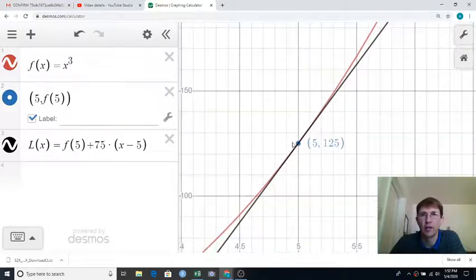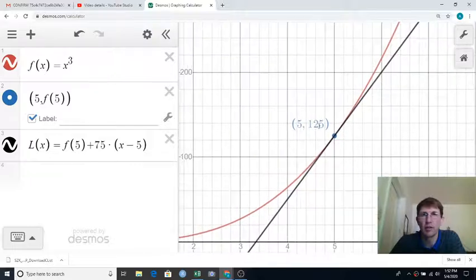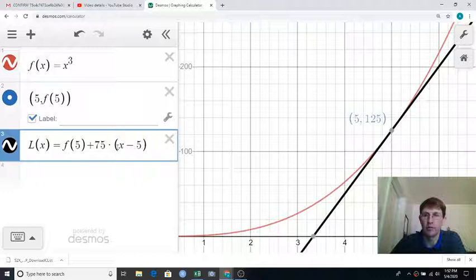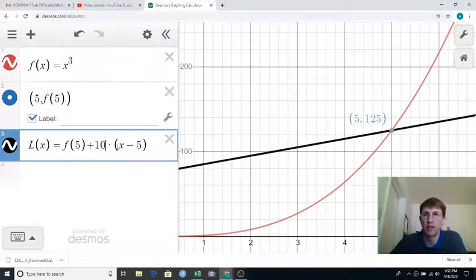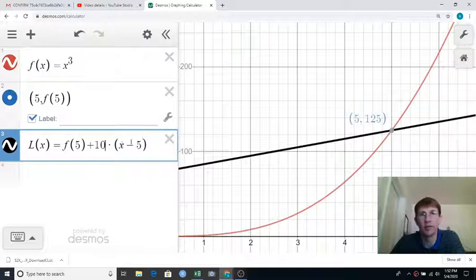So let's zoom back out and talk about what could have gone wrong. We did a lot of work trying to figure out that 75, what if we had gotten that wrong? What if we had gotten, I don't know, 10? Well, we could say that line is not a very good approximation of the red curve in that region, or at all, really.